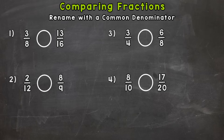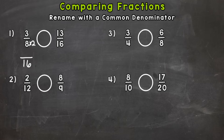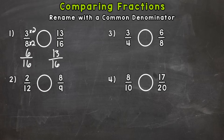The common denominator for 8 and 16 is 16. Let's rename the first fraction — 8 times 2 gives me 16, so to find an equivalent fraction we need to do the same thing to the top: 3 times 2 gives me 6. So three eighths is equivalent to six sixteenths — they hold the same value. The second fraction, thirteen sixteenths, already has a denominator of 16, so I do not need to rename it.